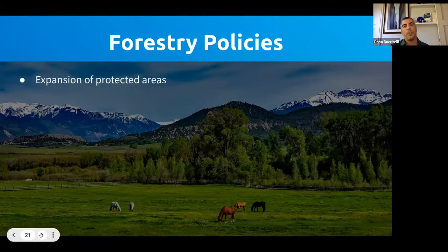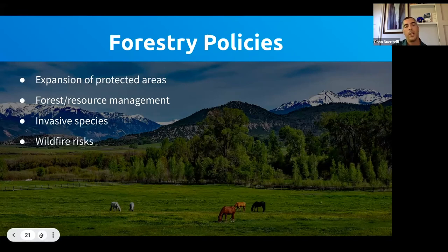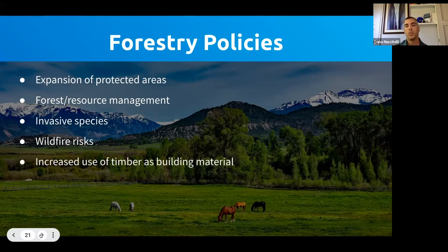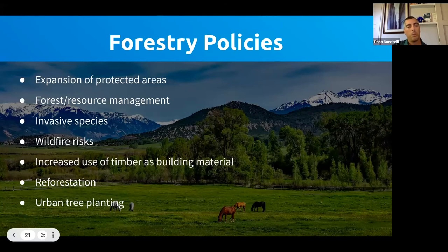Policy tools for forests and trees include: expanding protected areas to conserve forests; forest resource management to address invasive species and bark beetles; measures to reduce wildfire risk; encouraging use of timber as a building material to displace concrete and steel; reforestation of depleted areas; and urban tree planting to address tree equity, air pollution, and heat waves worsened by climate change.